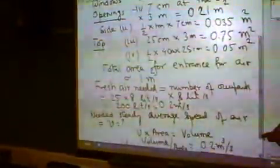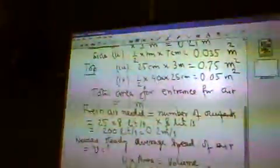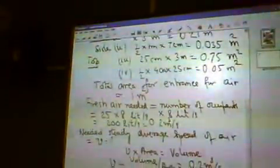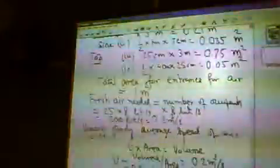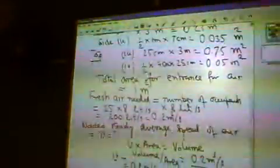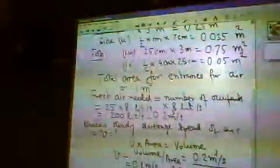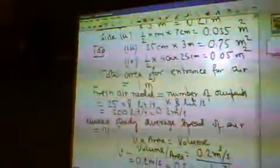Fresh air needed can be calculated using the formula: number of occupants multiplied by 8 liters per second per occupant. If I have 25 students, that will need 200 liters per second of fresh air, that is 0.2 cubic meters per second.